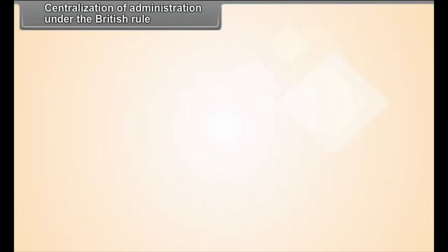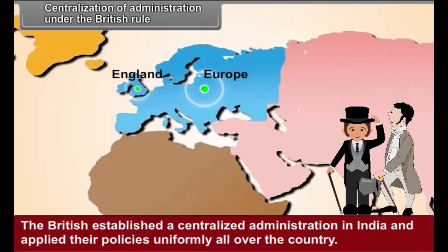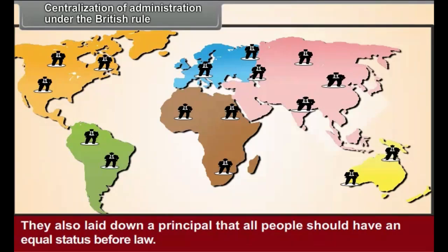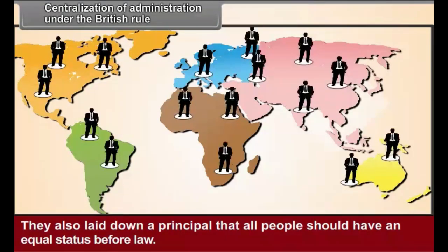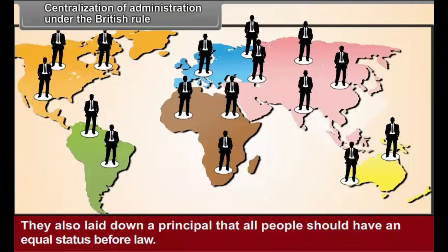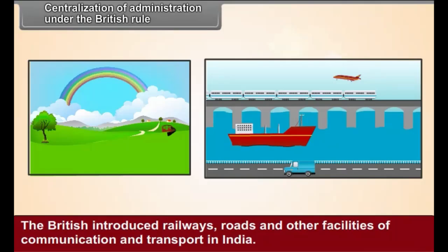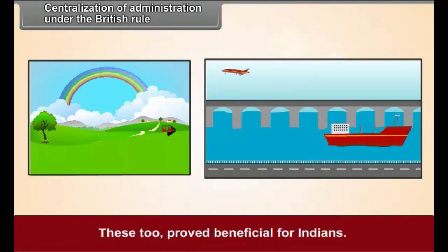Centralization of Administration Under British Rule: The British established a centralized administration in India and applied their policies uniformly all over the country. They also laid down a principle that all people should have an equal status before law. The British introduced railways, roads and other facilities of communication and transport in India. These proved beneficial for Indians, as people living in different provinces came into more contact with one another, leading to the development of a national feeling among them.